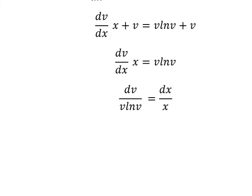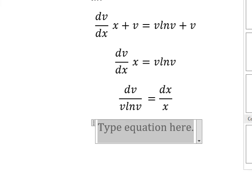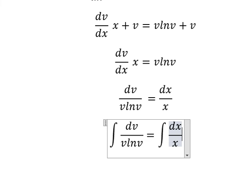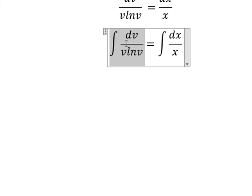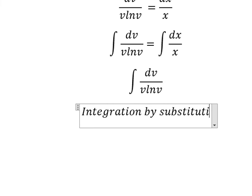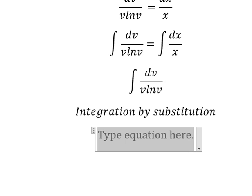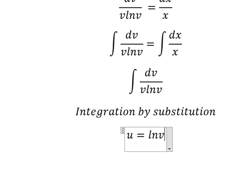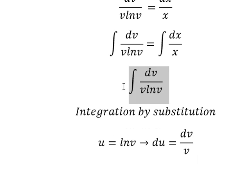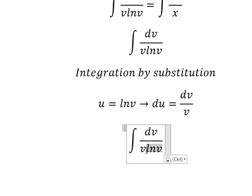Next we put the integration for both sides. Now I will concentrate about this one only — we need to use integration by substitution. So I will put u equals to ln v. Then we do the first derivative for both sides, and we have dv over v. So this one we change by du — dv over v we change by du.